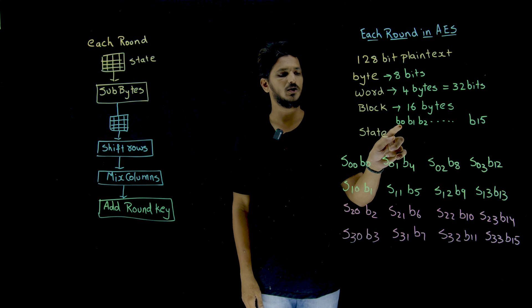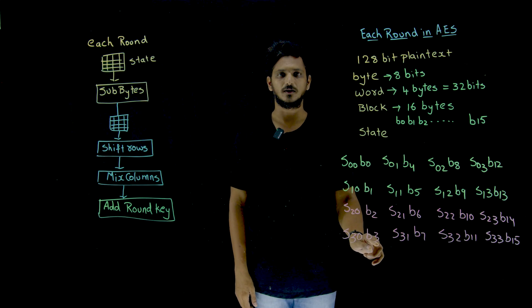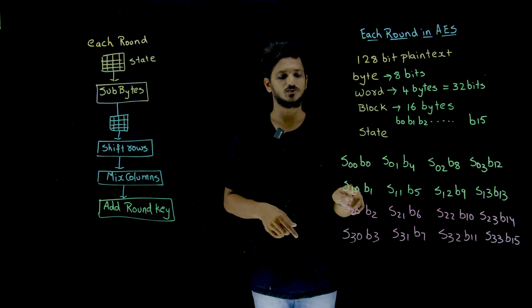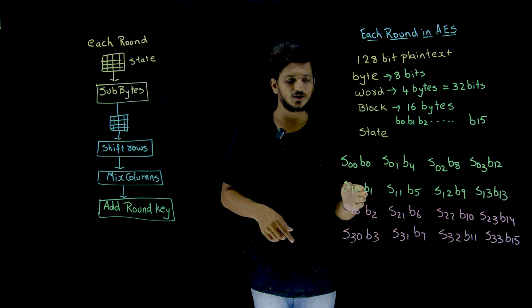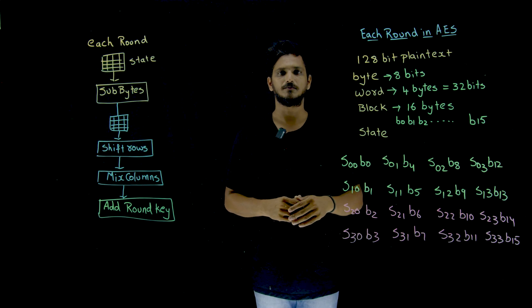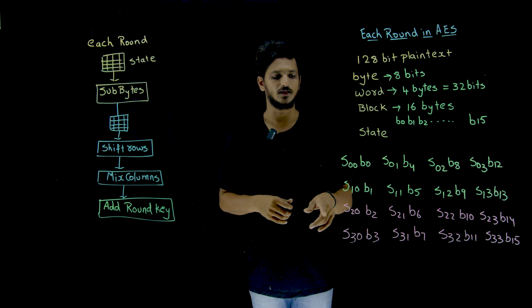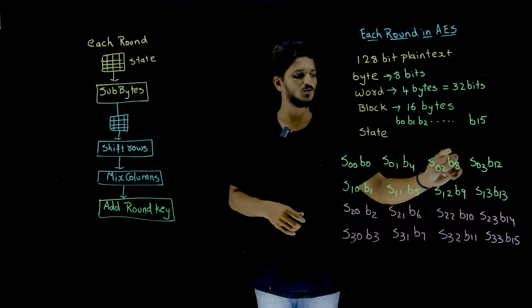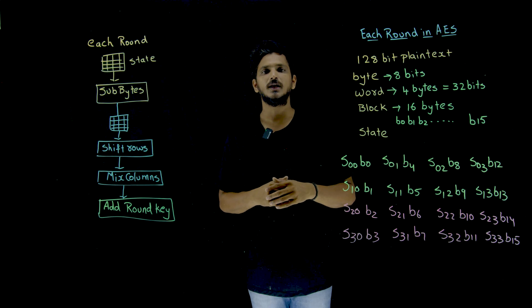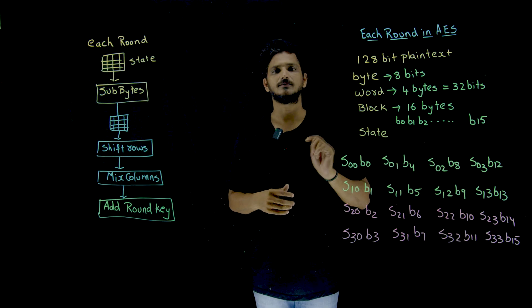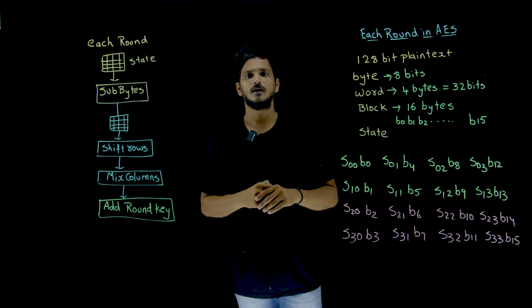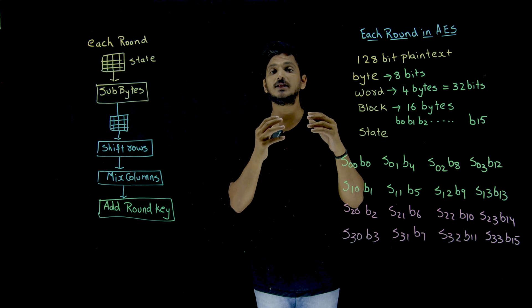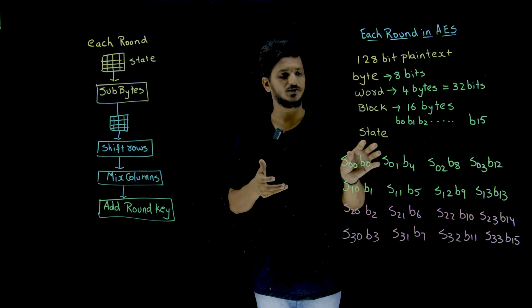That's why we are maintaining the column order. The first bytes B0, B1, B2, B3 and in matrix notation these are the values: S00, S10 — the indexes are the row and column positions. So B0, B1, B2, B3, then B4, B5, B6, B7, and so on — this is how data is stored in AES. This we call it as a state. Our input is taken in the form of states; this is one state.